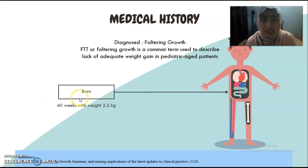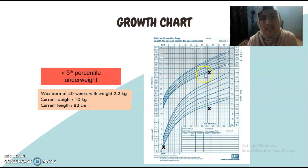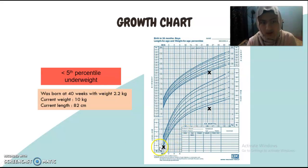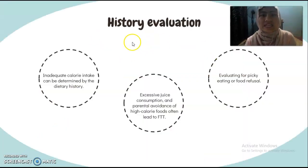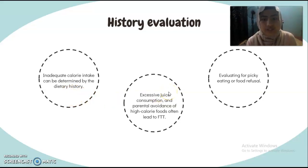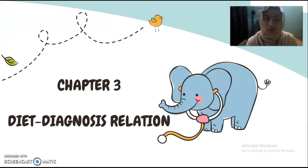This patient was born at 40 weeks with a weight of 2.2 kg. As you can see from her growth chart by the CDC, her weight was below the 5th percentile, and her current weight and length also show that she is underweight. For the history evaluation, inadequate calorie intake can be determined by diet history. Excessive juice consumption and parental avoidance of high-calorie food often lead to faltering growth, and we should evaluate for picky eating or food refusal.